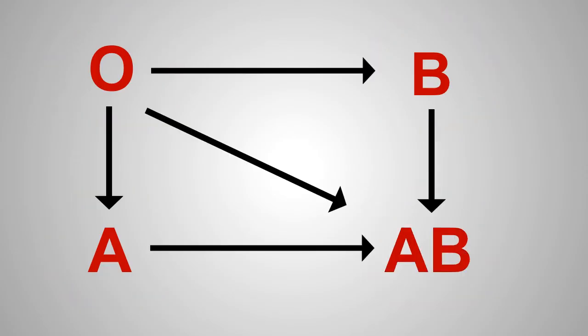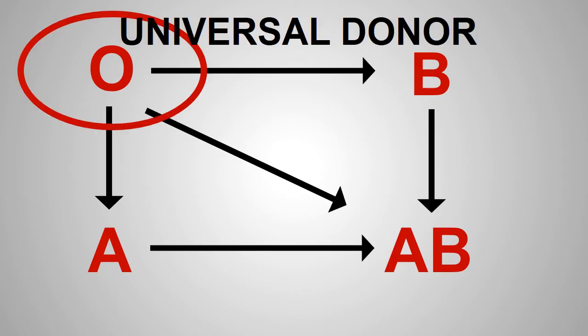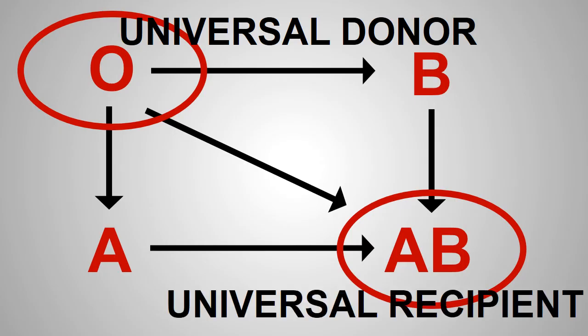Because group O can give blood to all the other groups in the ABO system, they are considered universal donors. And because group AB can receive blood from all the other groups in the ABO system, they are considered universal recipients.